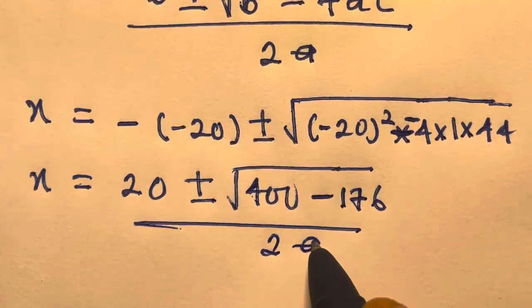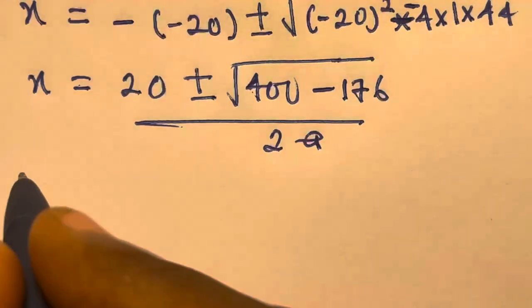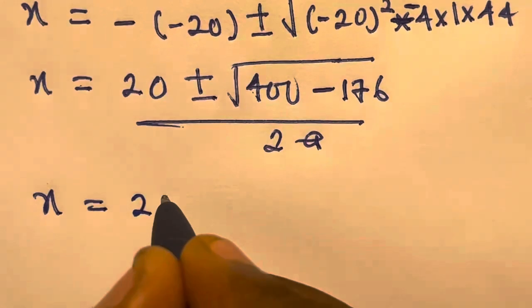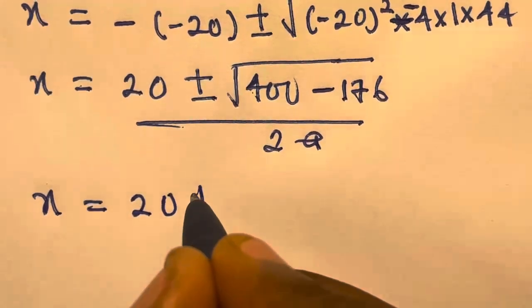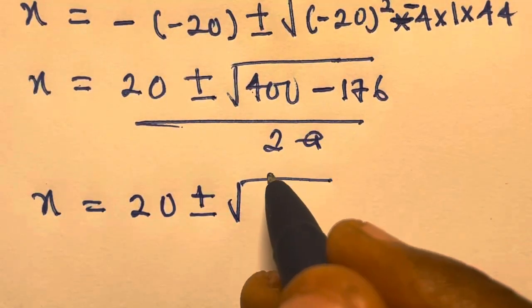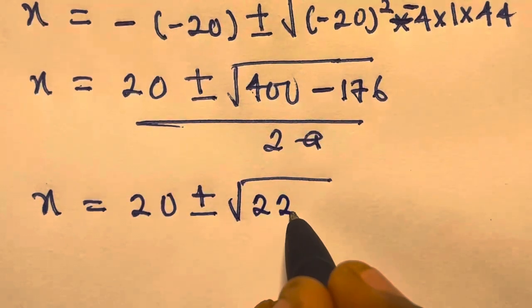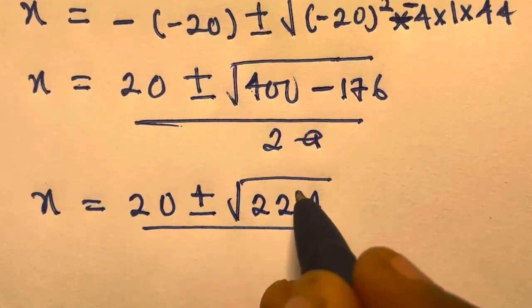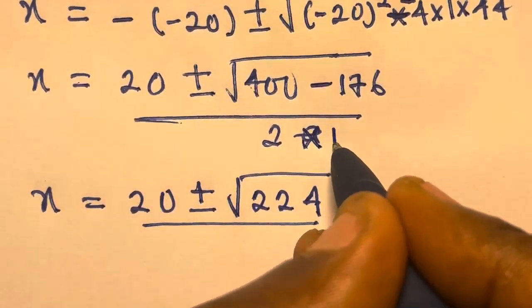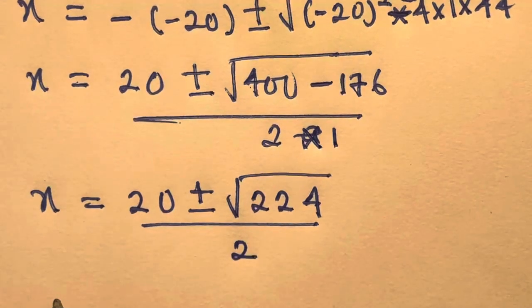Divided by 2a. So we have x equals 20 plus or minus square root of 400 minus 176, and 2a is 2 times 1, so we have divided by 2.